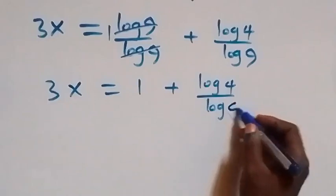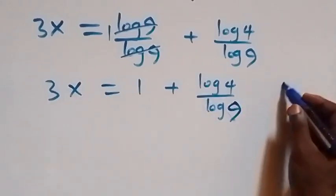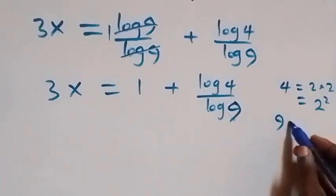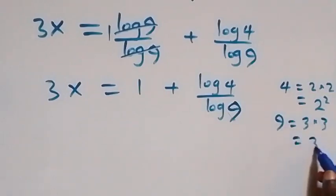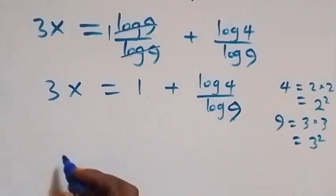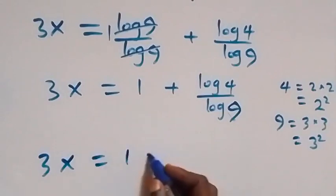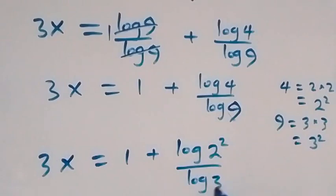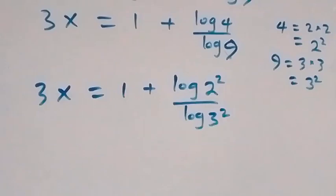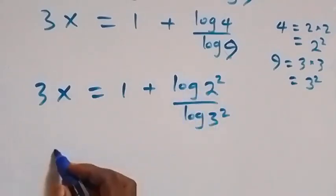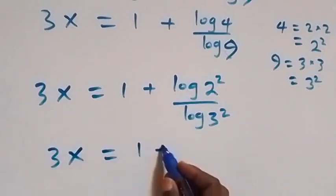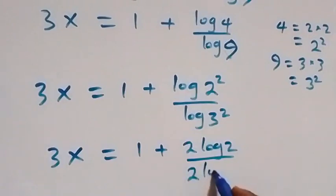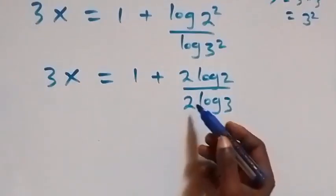We can simplify further by writing 4 as 2 times 2, which equals 2 squared, and 9 as 3 times 3, which equals 3 squared. So what we have becomes 3x equals 1 plus log 2 squared over log 3 squared. Applying the power law of logarithms, the 2 comes down in both numerator and denominator, giving 3x equals 1 plus 2 log 2 over 2 log 3. The two's cancel each other.